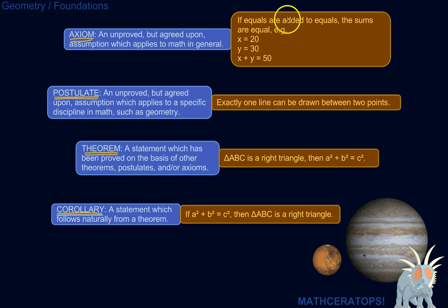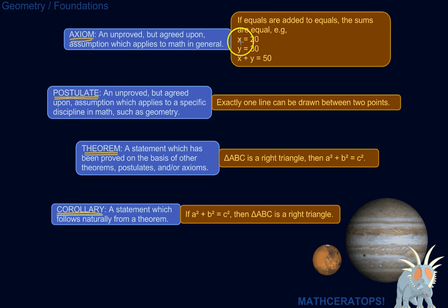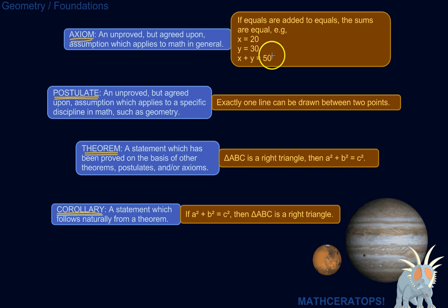For example, if equals are added to equals, the sums are equal. So if x equals 20 and y equals 30, then x plus y equals 50 — 20 plus 30.